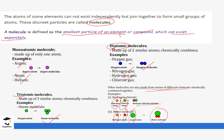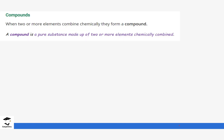Compounds are pure substances — just like elements — made up of two or more elements chemically combined. So if you pick more than one element, such as oxygen, hydrogen, carbon, or chlorine, and combine them chemically, you form something referred to as a compound. Examples of compounds depend on which elements are combined.